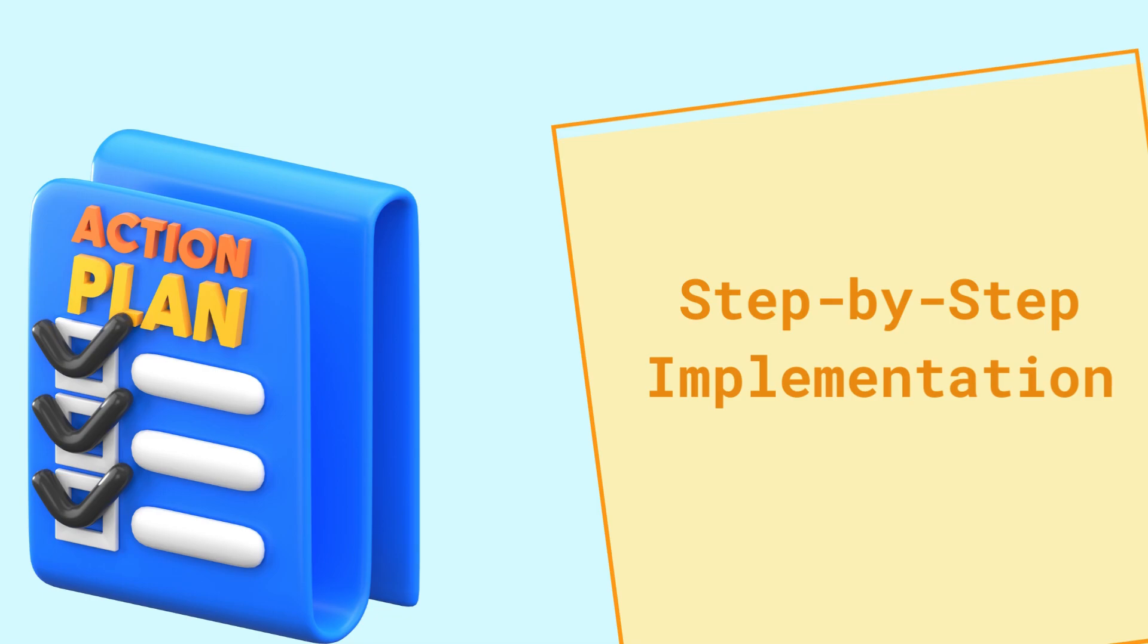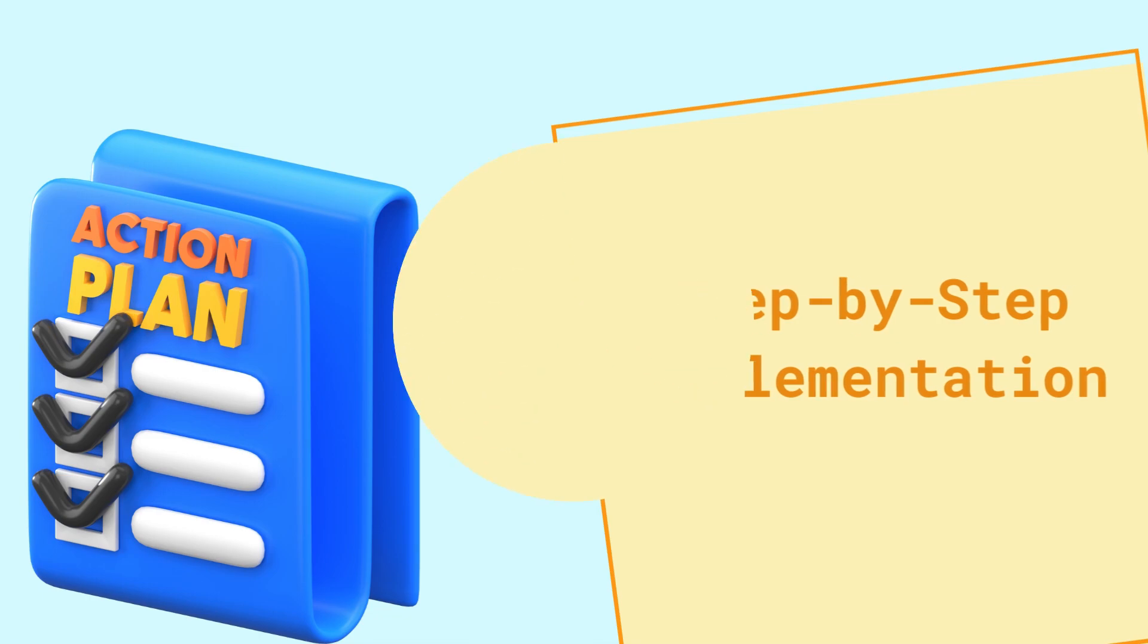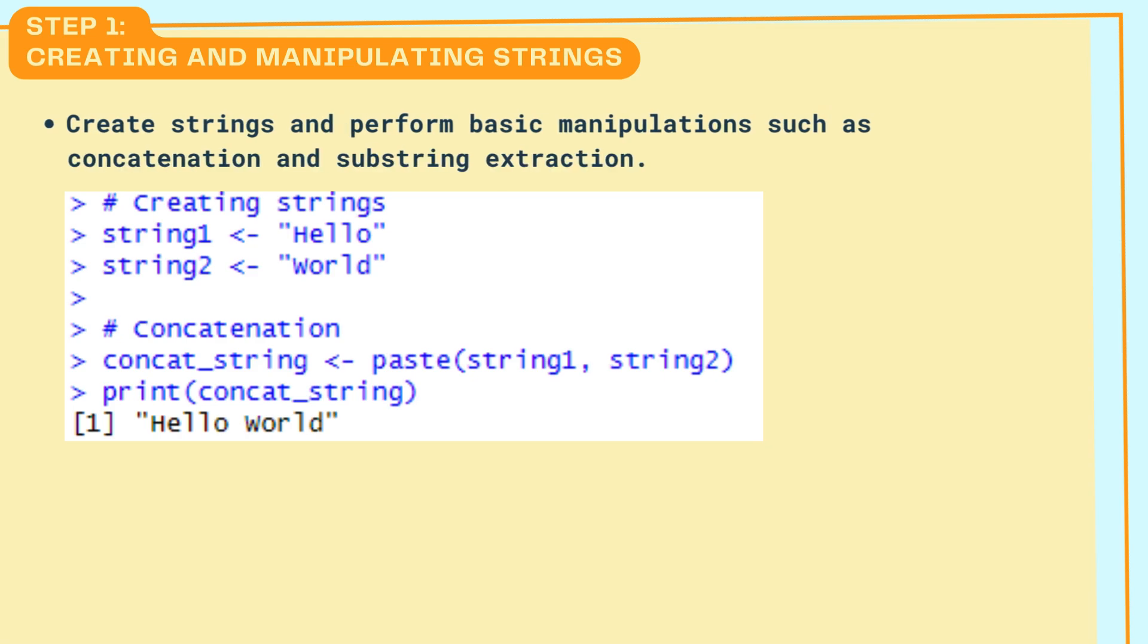Step-by-step implementation. Step 1: Creating and Manipulating Strings. Create strings and perform basic manipulations such as concatenation and substring extraction. We created the strings string 1 and string 2 and concatenated them using the paste function.